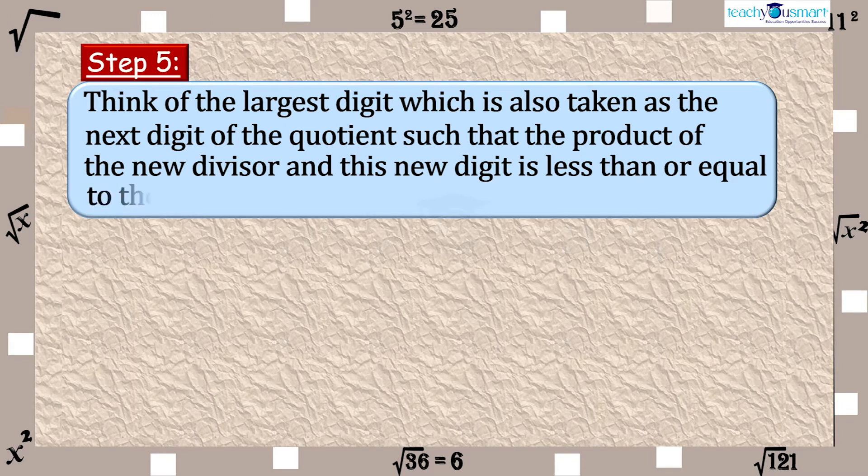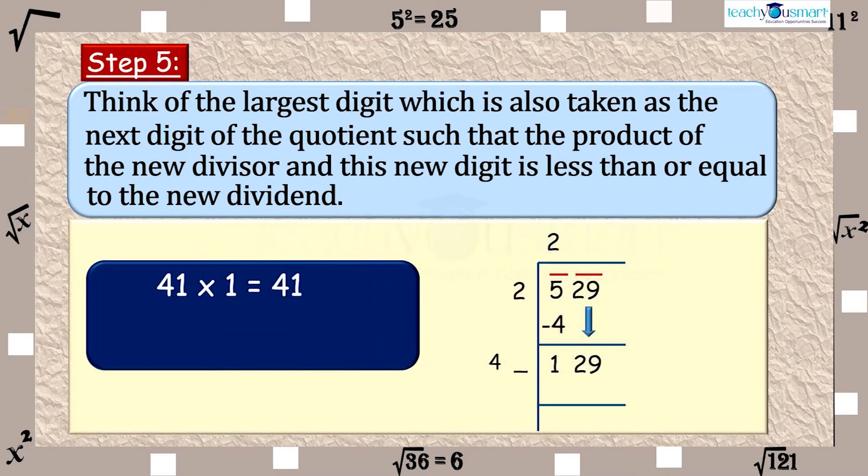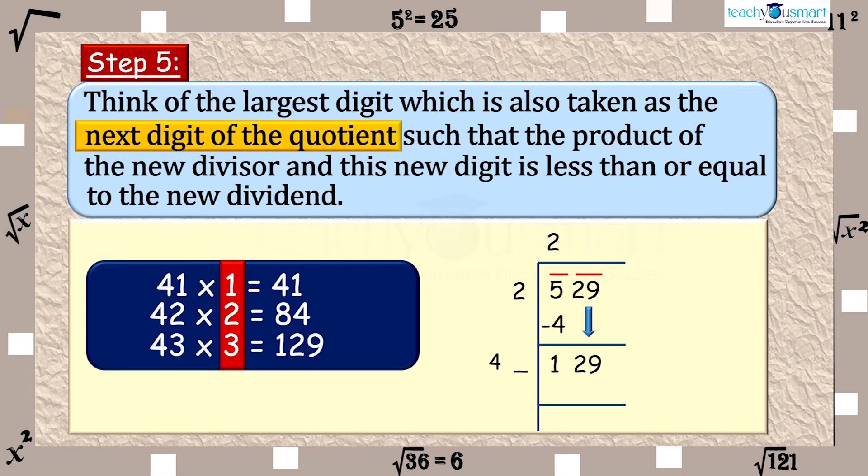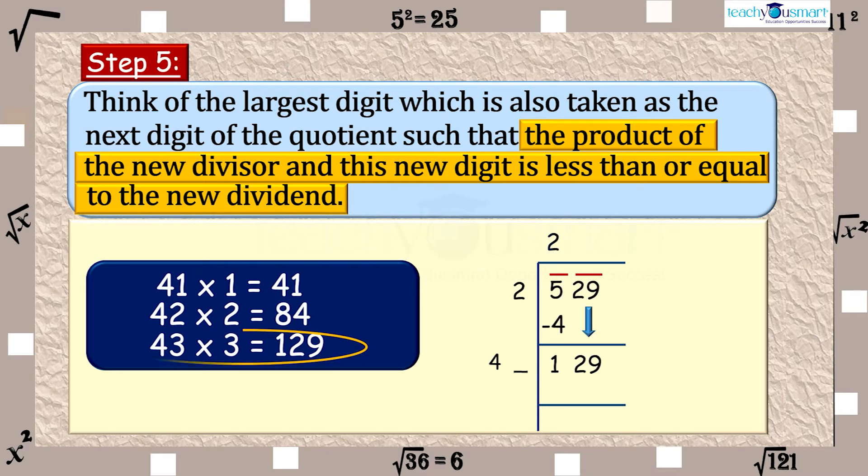Here, 41 multiplied by 1 equals 41, 42 multiplied by 2 equals 84, 43 multiplied by 3 equals 129. So we choose the new digit as 3. Divide and get the remainder.